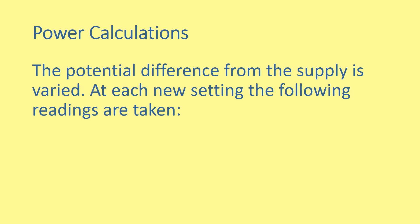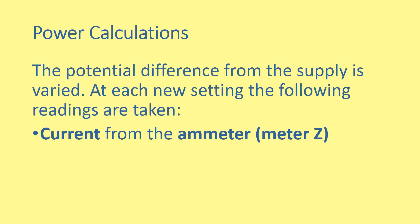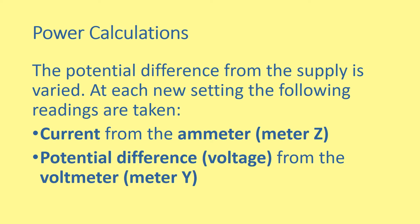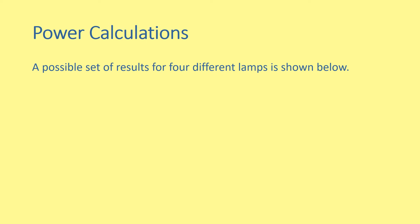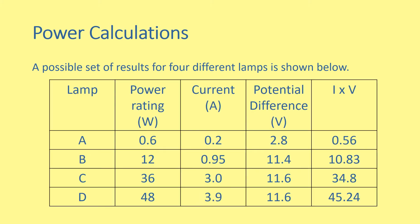Power Calculations. The potential difference in the supply is varied. At each new setting, the following readings are taken: current from the ammeter and potential difference. A possible set of results for four different lamps are shown below. We have a lamp with a power rating of 0.6 watts, current of 0.2 amperes, potential difference 2.8 volts. We use the power equation P equals IV to find a power which is a little bit less than the rating. We expect the experimental results to show a calculated power less than the power rating, because there's always going to be some energy loss within the circuit. We see the same trend shown throughout.